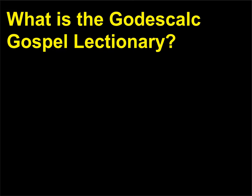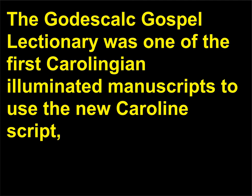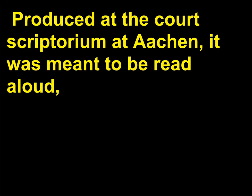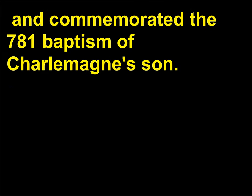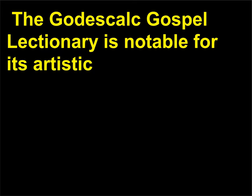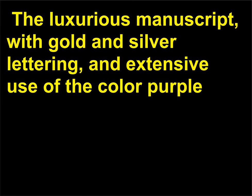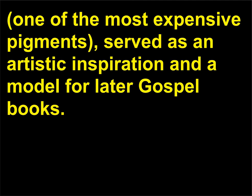What is the Godescalc Gospel Lectionary? The Godescalc Gospel Lectionary was one of the first Carolingian illuminated manuscripts to use the New Caroline script, and was named for a scribe who signed his name in the book. Produced at the court scriptorium at Aachen, it was meant to be read aloud and commemorated the 781 baptism of Charlemagne's son. The Godescalc Gospel Lectionary is notable for its artistic naturalism and incorporation of ancient Roman styles. The luxurious manuscript, with gold and silver lettering and extensive use of the color purple — one of the most expensive pigments — served as an artistic inspiration and a model for later gospel books.